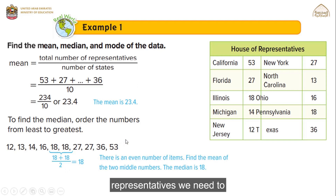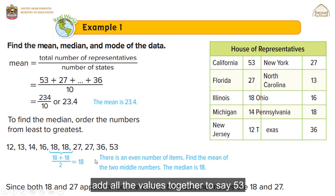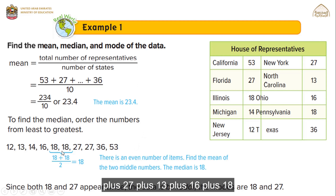While ordering these values from least to greatest, I observed that 18 and 27 both repeated twice — these are the most repeated values. It means that this data has two modes, which are 18 and 27, and the data is bimodal because we have two modes.